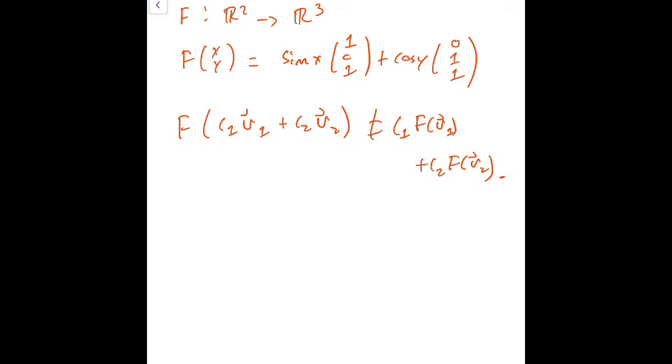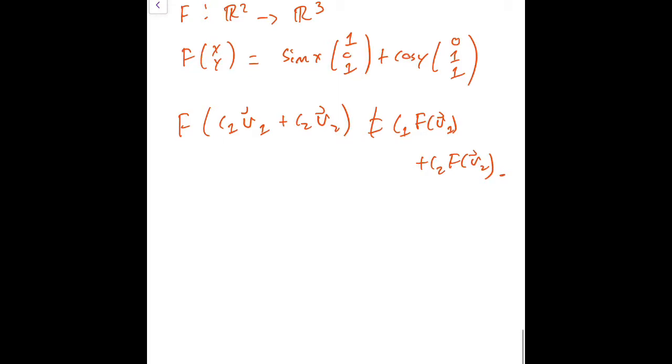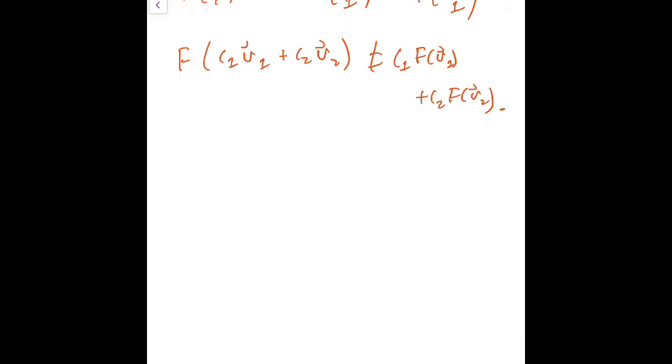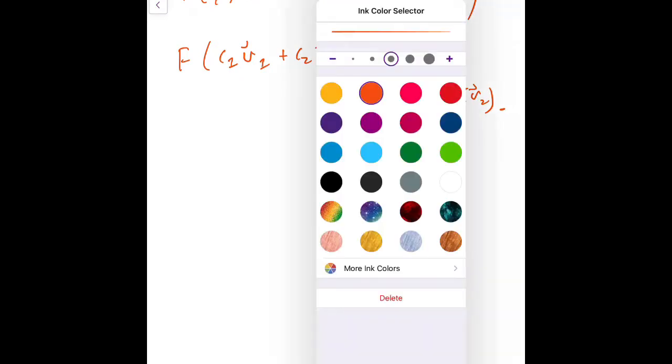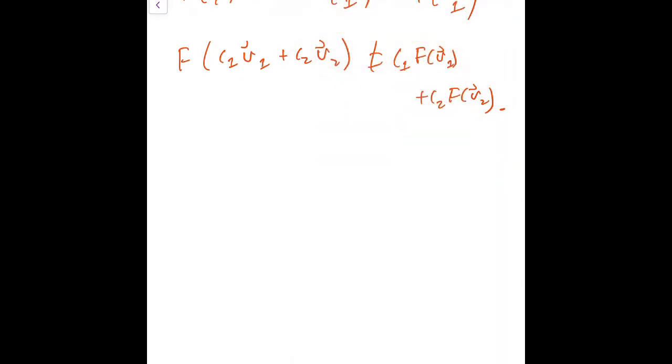Now, some of you might already see a trick or what to do, but I'm just going to kind of act like maybe we think it is linear, and try to prove that it's linear, and then see what happens, see where the problem happens. So let's say I want to apply F to the vector C1 (x1, y1) plus C2 (x2, y2). So what is this going to be?